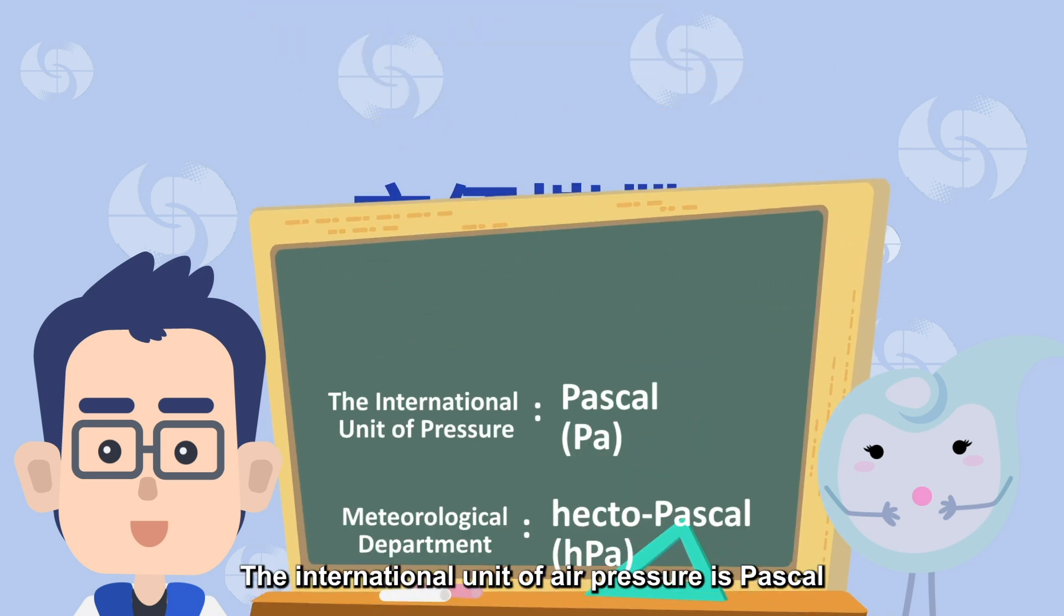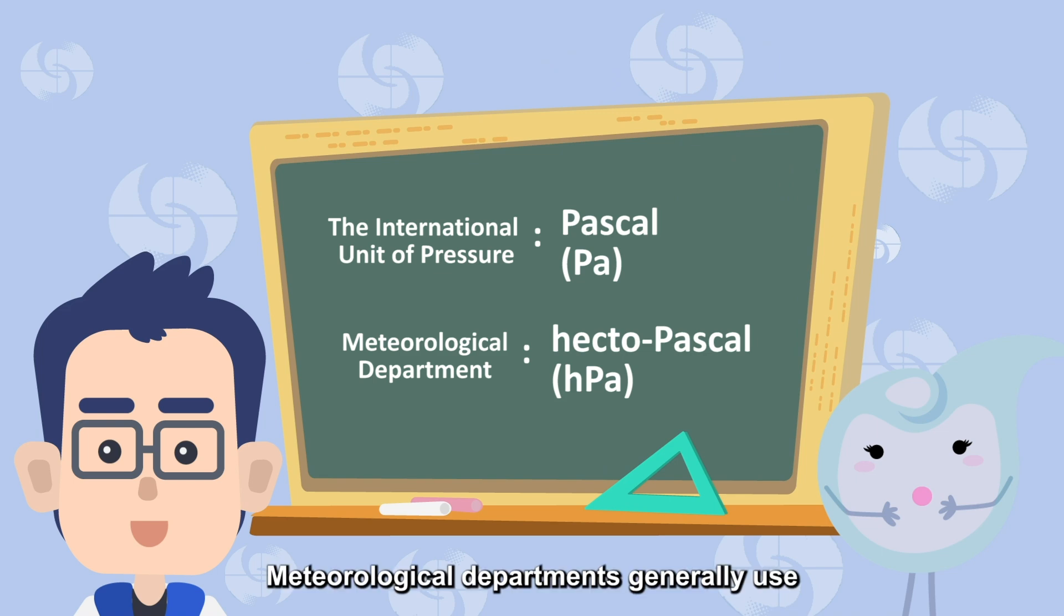The international unit of air pressure is pascal. Meteorological departments generally use hectopascal as the unit of air pressure. I see!